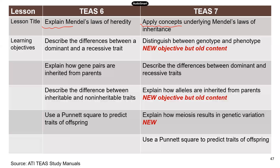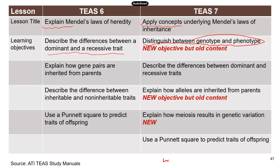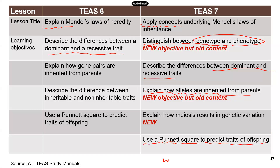Now let's look at the specific objectives. Some of the new objectives in TEAS 7 are really about just the wording — it's old content but phrased a little differently. For instance, 'distinguish between genotype and phenotype' was in TEAS 6. Another one is 'explain how alleles are inherited from parents' — also old content listed as a new objective. You still need to know the differences between dominant and recessive traits, and you need to be able to apply the Punnett square to predict traits of offspring.